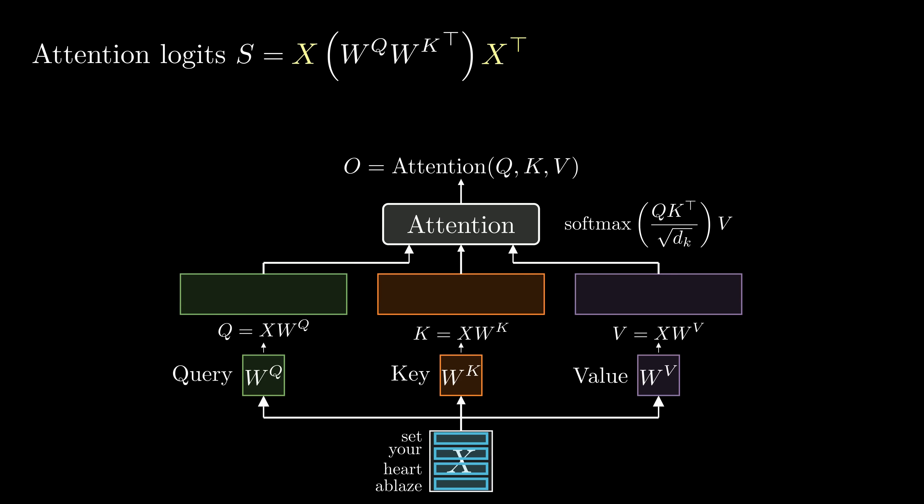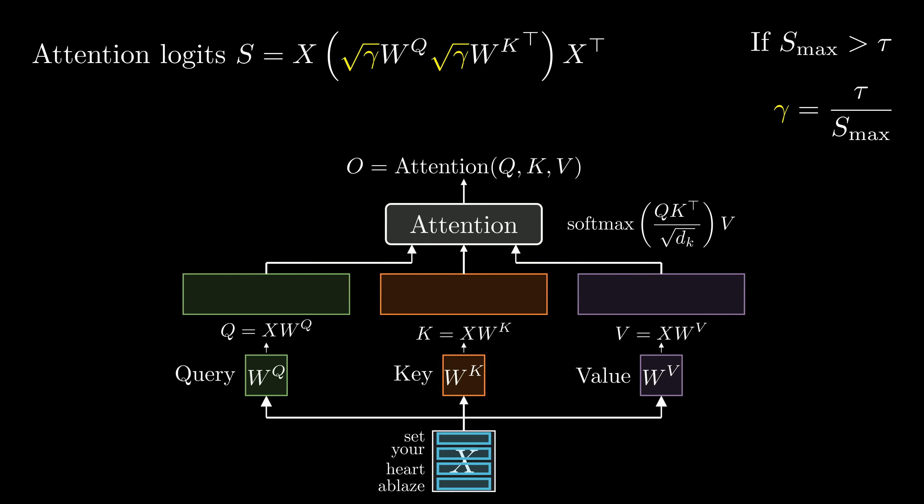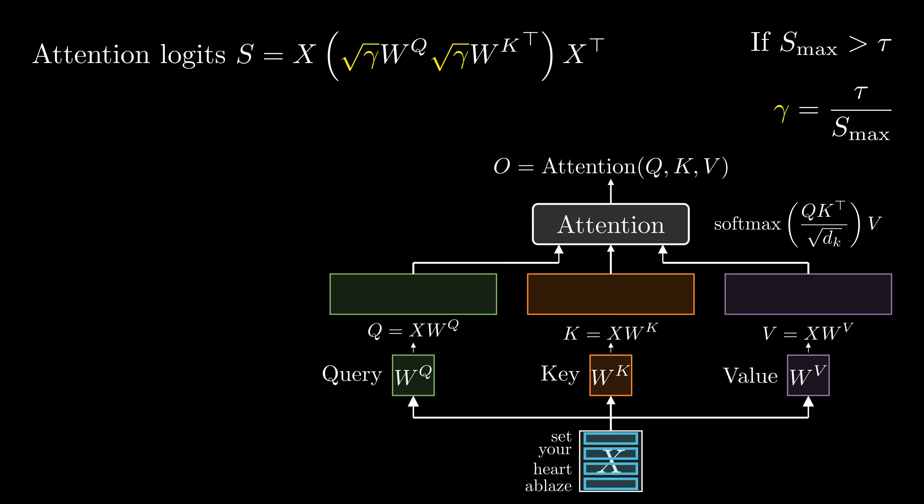Note that the matrix x and its transpose denote the embedding vectors, which are typically normalized to have unit norms. To prevent the attention logits from becoming excessively large, we must control the scale of wq and wk. A common strategy is to apply a scaling factor to these matrices. During training, we monitor the maximal value of the attention logits. If it exceeds a certain threshold tau, we calculate a scaling ratio denoted as gamma. The idea is simple. When the attention logits surpass the threshold tau, we simply scale the relevant model parameters by the factor gamma to keep them in check. Because both wq and wk contribute to the attention logits, we scale each of these matrices by the square root of gamma.